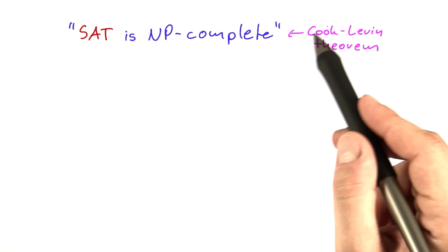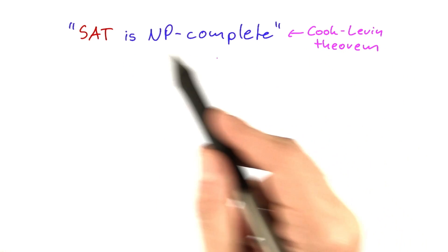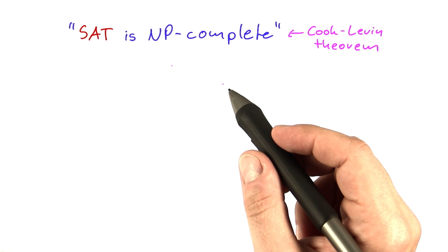So what were the main ideas that Cook and Levin used to prove this? Because it still sounds quite difficult, doesn't it?